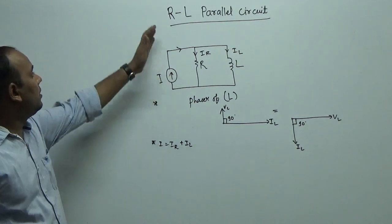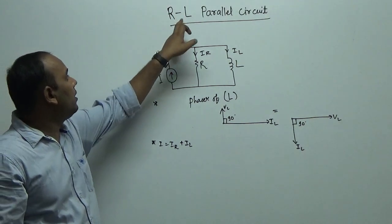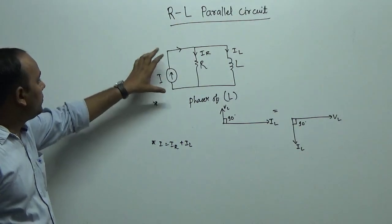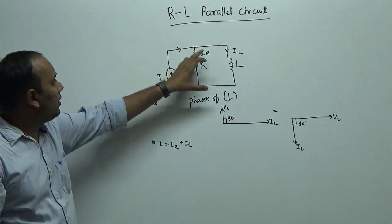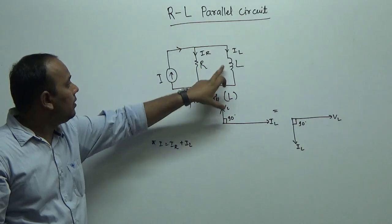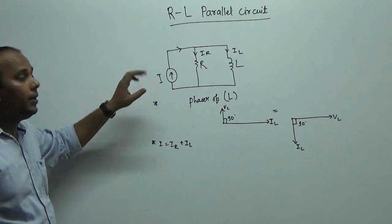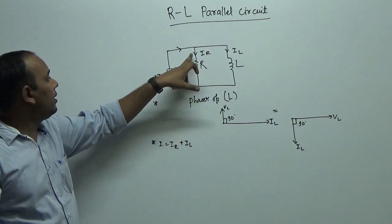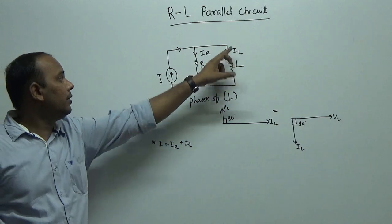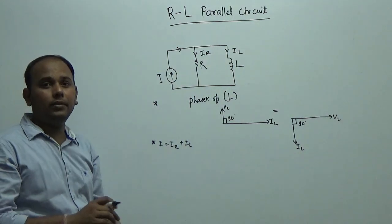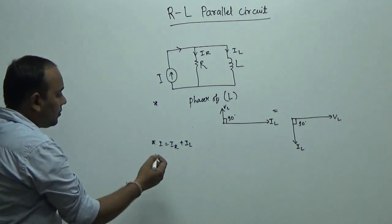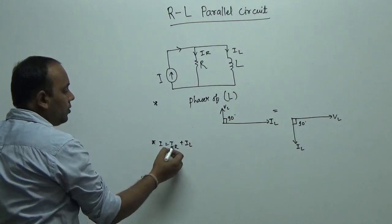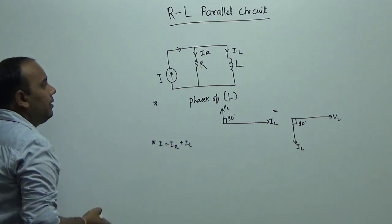This is a parallel RL circuit, where R is connected in parallel with L. The current flowing through R is IR and the current flowing through L is IL. Therefore, the total current I is equal to IR plus IL.